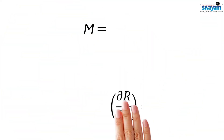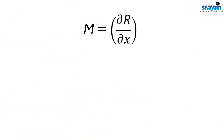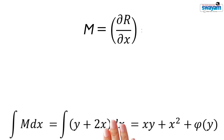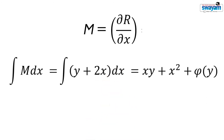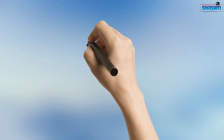Recall that M is the partial derivative of R with respect to x. Integrating M gives this result. Though phi of y is treated as a constant in this integration process, it is actually not a constant. Do you know why? Think it over.